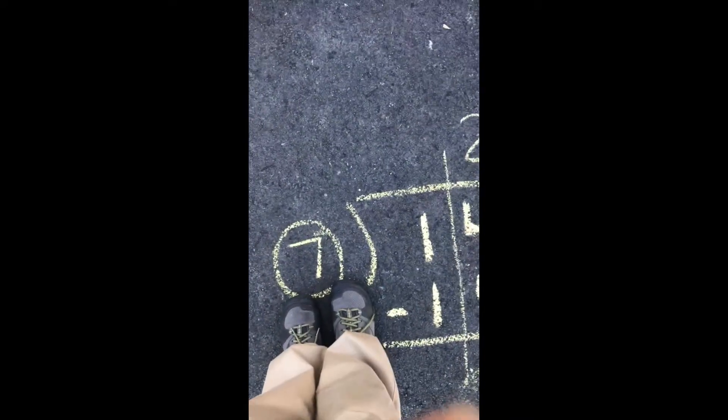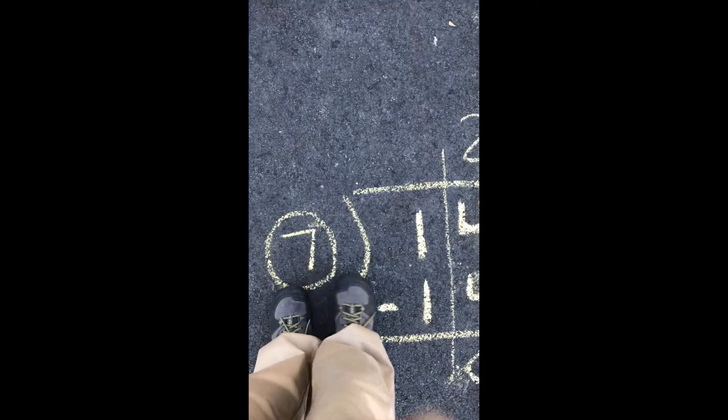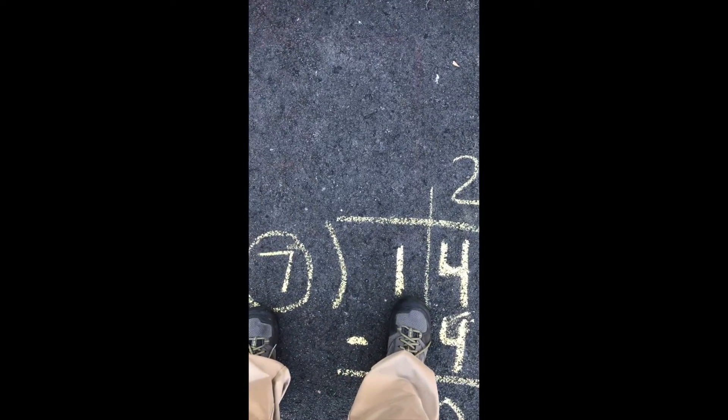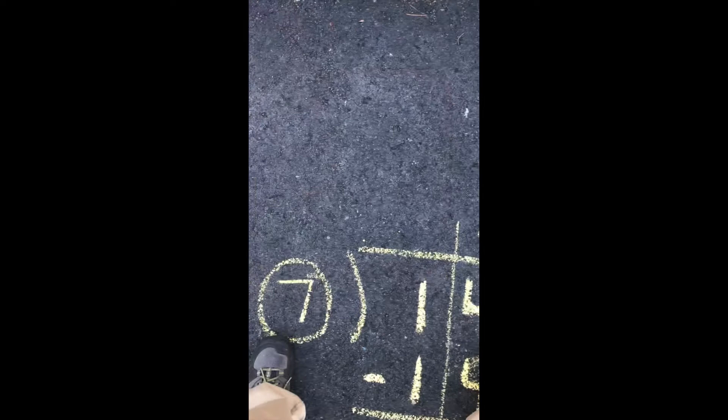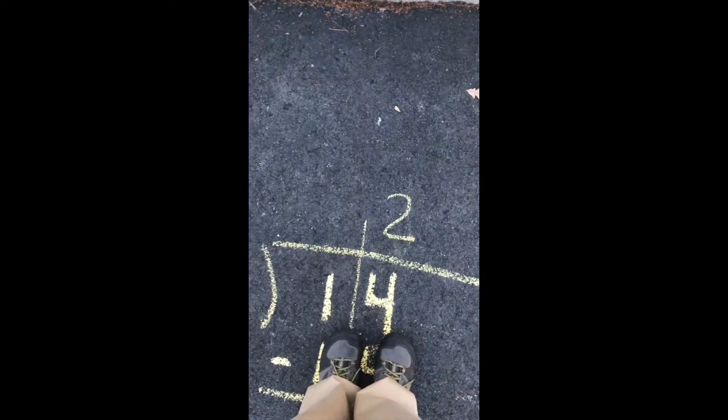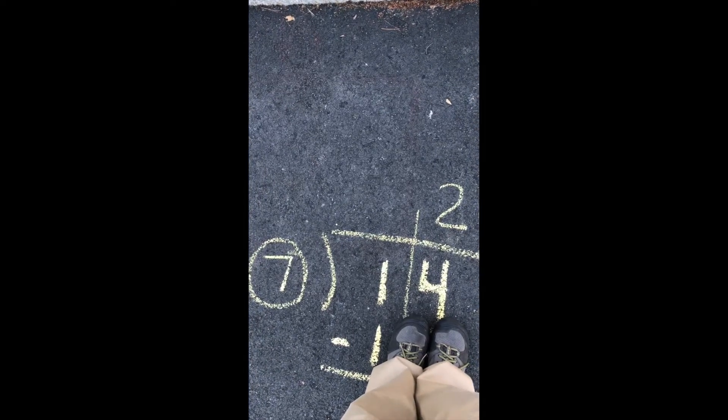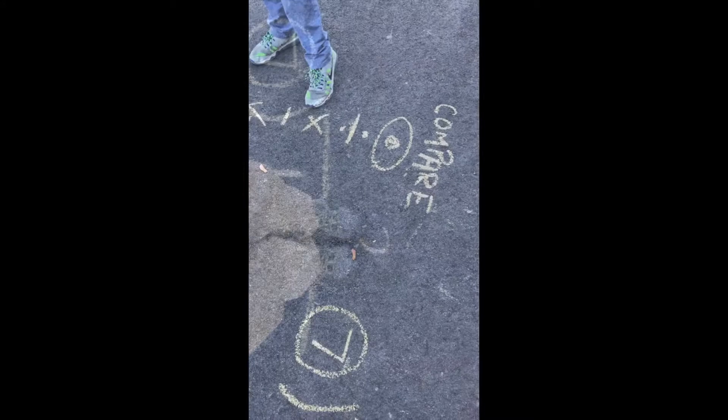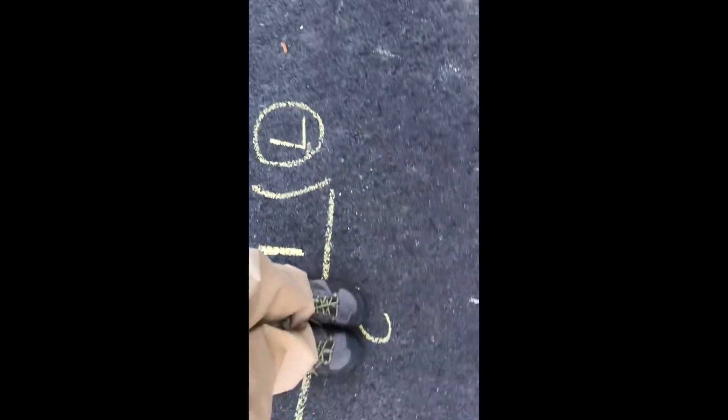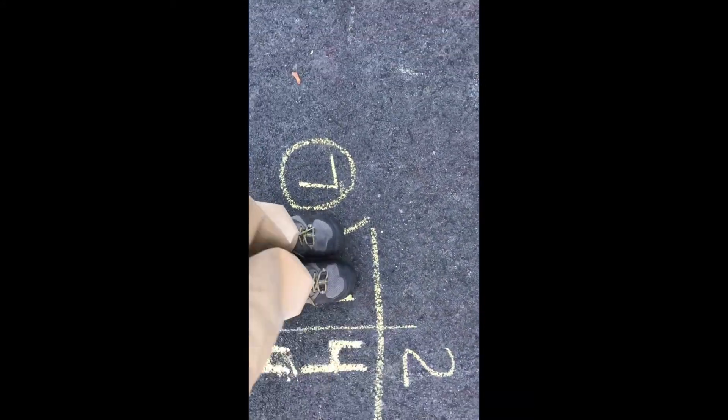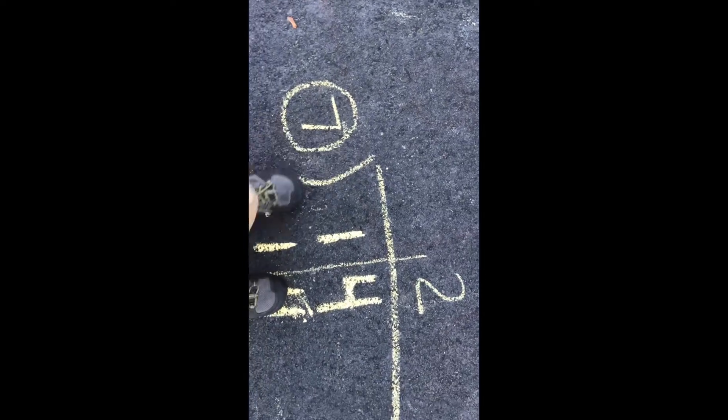So the first thing you need to do, again, is to compare. Okay. I'm comparing seven with one. Nope. I can't get seven out of 14, though. Yeah. All right. So I'm going to stand right here. What's next? Then you've got to divide. Okay. So 14 divided by seven is two. Now you've got to multiply. Okay. Two times seven is 14.